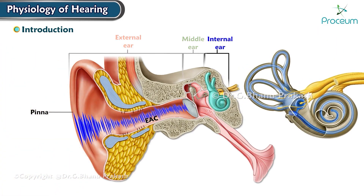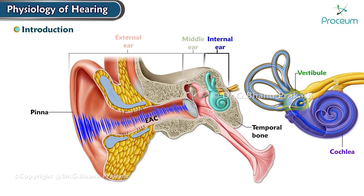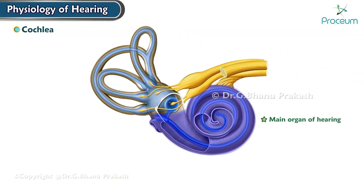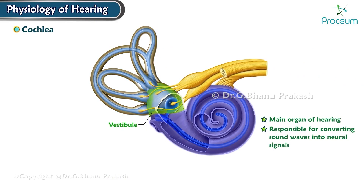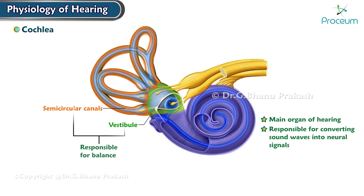The inner ear is located deep within the temporal bone of the skull. The inner ear consists of the cochlea, vestibule, and semicircular canals. The cochlea is the main organ of hearing and is responsible for converting sound waves into neural signals. The vestibule and semicircular canals are responsible for balance.